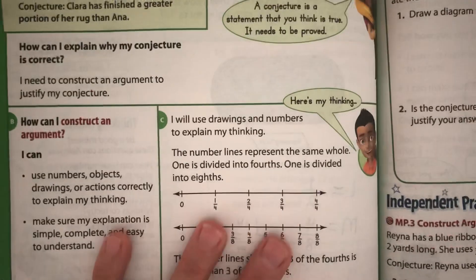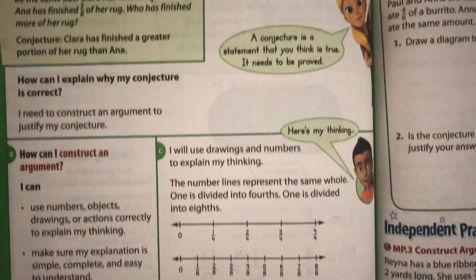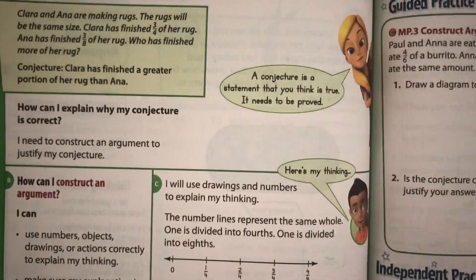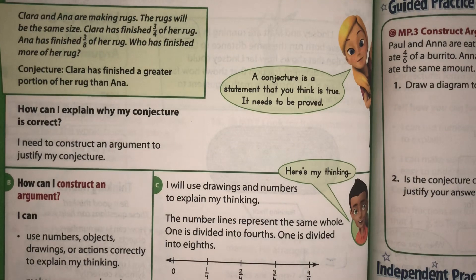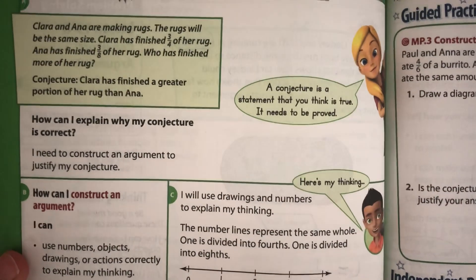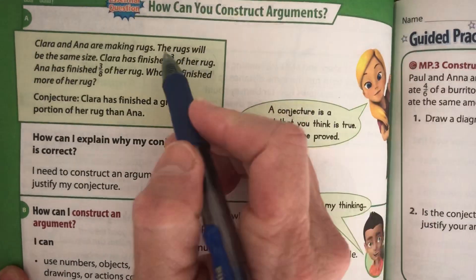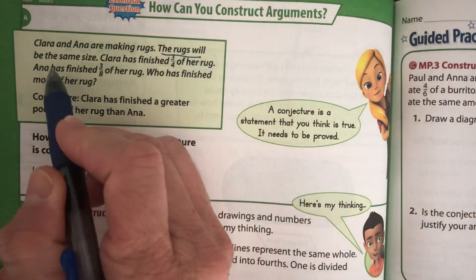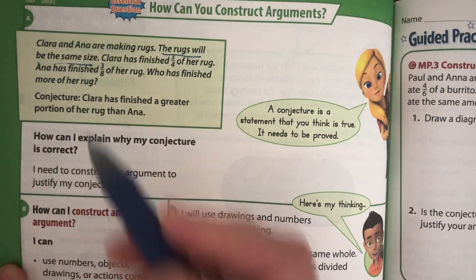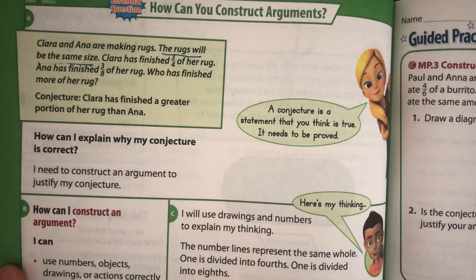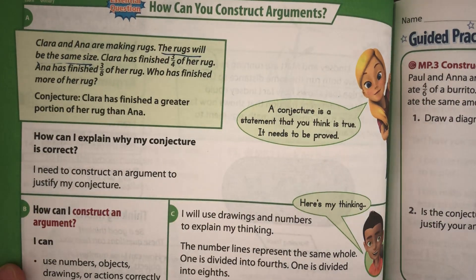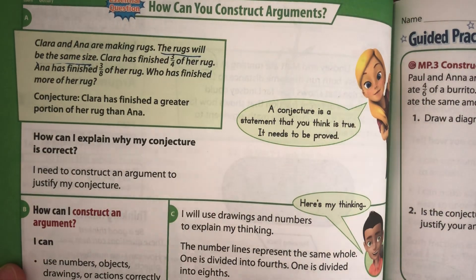Let's look at the next problem. Clara and Anna are making rugs. The rugs will be the same size — that's important, because they have to be the same size or else we have a very difficult time comparing fractions and saying they're equivalent.